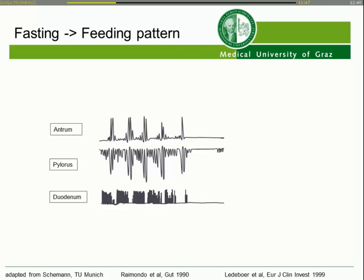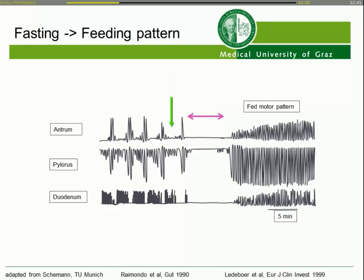In healthy volunteers, when you feed your patient there is a lag phase — a period of some minutes where nothing happens — and after this the feeding pattern starts (MMC phase 3 to feeding pattern). The problem in our critically ill patients is that this switch to the feeding pattern does not happen, or you need higher caloric loads to initiate it.